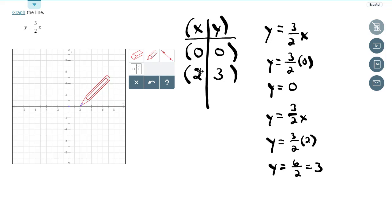And then 2, 3, which is right 2, up 3. Put my point there. And then I draw my line. And that's it.